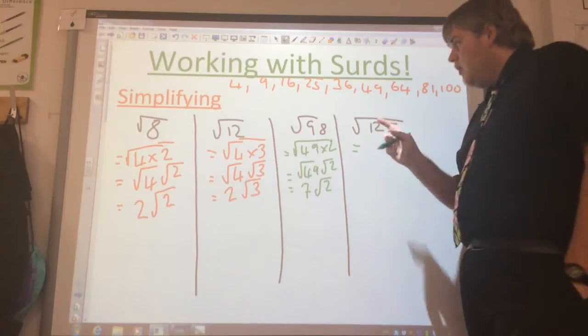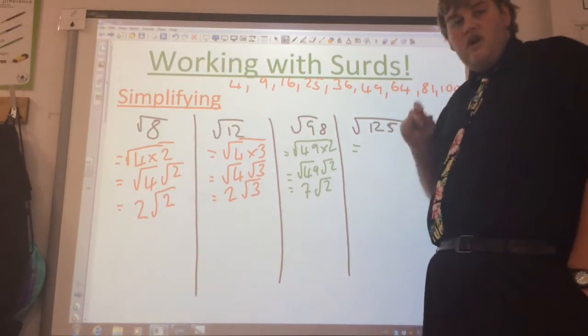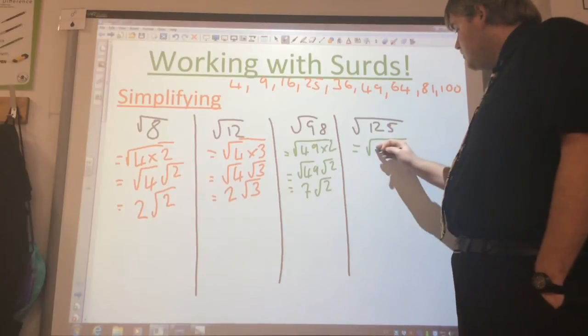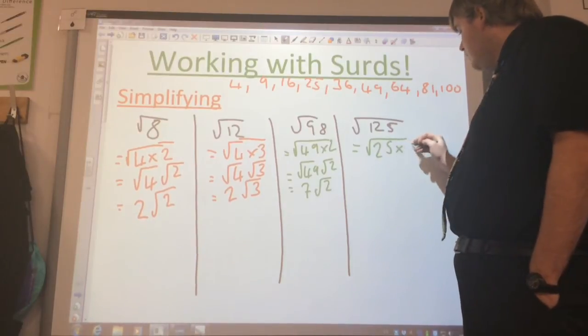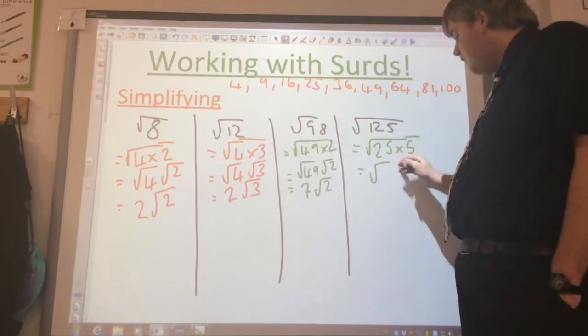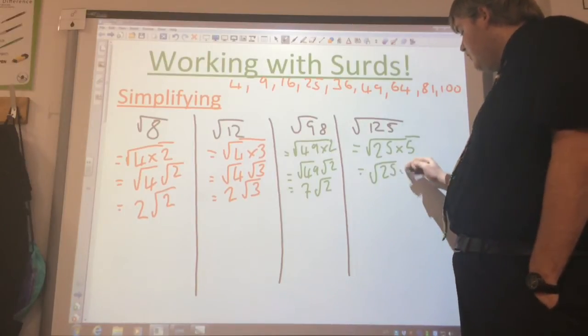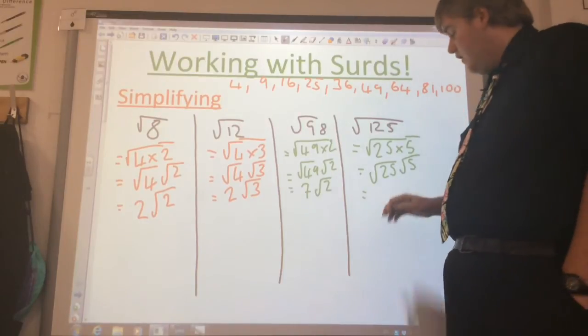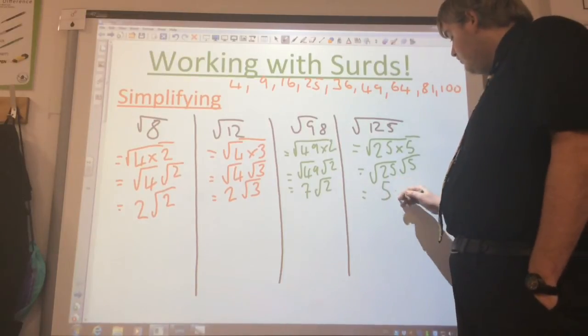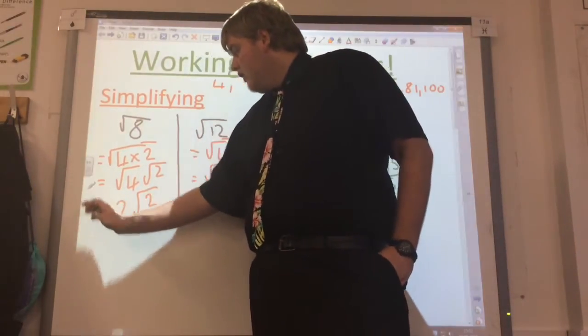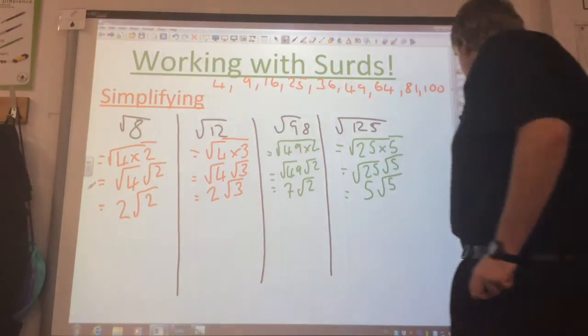One last one, nice and simple. Now we've got the hang of it. The biggest square number that goes into 125 exactly is 25. So this is going to be the square root of 25 times 5. Again we split these, so that becomes root 25, root 5. And as we all know, the square root of 25 is 5. So this now becomes 5, the square root of 5. Done, lovely jubbly.